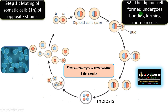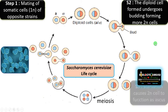This diploid cell undergoes budding, forming more diploid cells. This is the diploid yeast. It doubles within 100 minutes in laboratory conditions and grows as a diploid organism or diploid yeast cell.